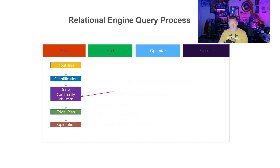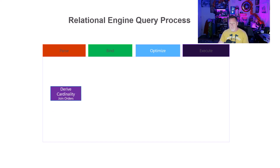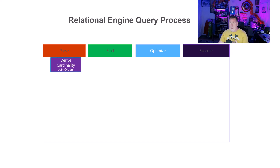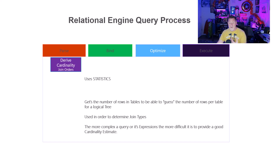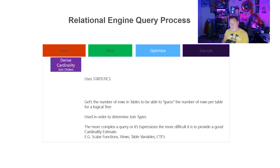Next up is derived cardinality and join orders. This is really important to understand — it really depends on statistics. Keep in mind that we got a new cardinality estimator in SQL Server 2014, and then we got some changes to statistics in SQL Server 2016. It uses statistics to get the number of rows in tables, so it's able to estimate the number of rows per table from a logical tree, and it's used to understand join type. The more complex a query or its expression, the more difficult it is to provide a good cardinality estimate. Things that can get in the way include scalar functions, views, table-valued functions, and common table expressions.